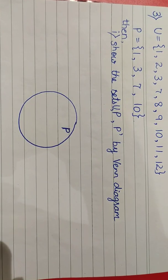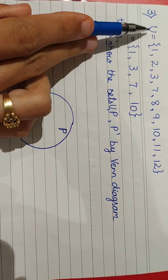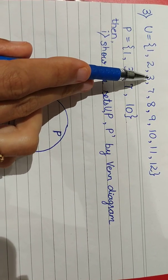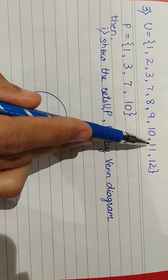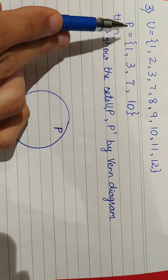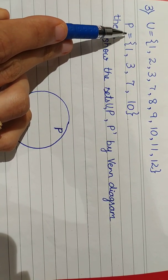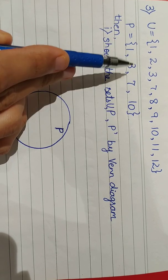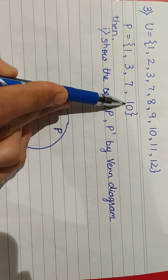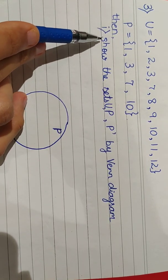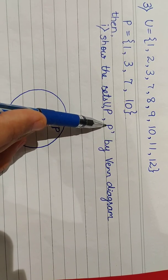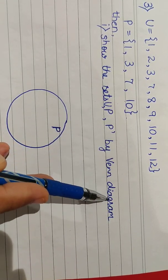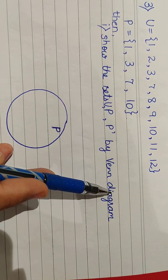Let's see Sum number 3. We have a universal set which contains elements 1, 2, 3, 7, 8, 9, 10, 11, 12. In this question, we need to show the sets — universal set, P, and complement of P — by Venn diagram. Let's see how to draw the Venn diagram for this question.